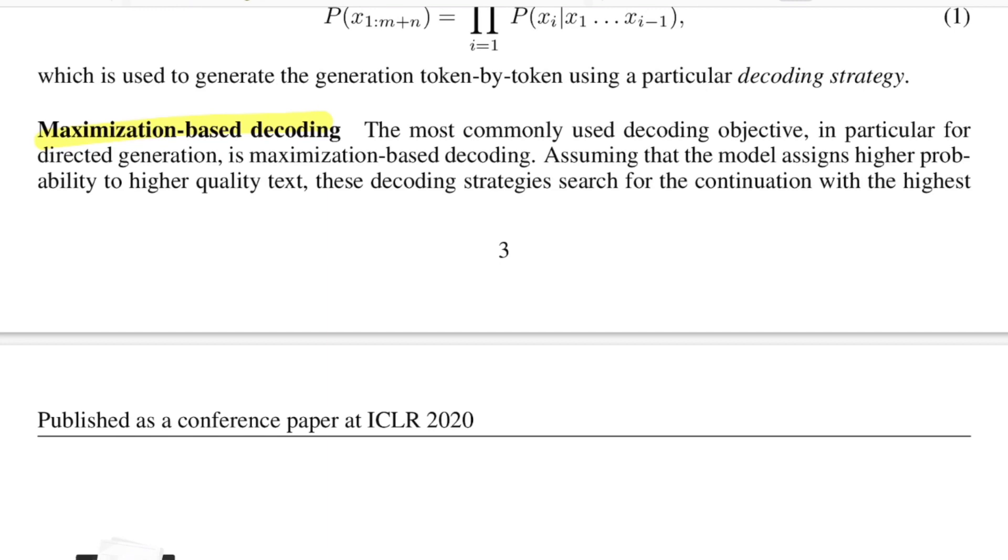Beam search is one of the search algorithms that follows this decoding strategy where you define a beam size, let's say 3. At every time step T, you sample top three words based on the softmax distribution. If we were supposed to generate four words, you have 3 to the power of 4 sentences that you'll generate, traversing through different paths.